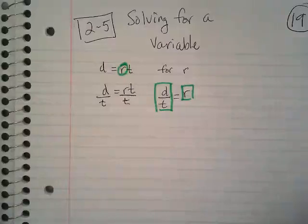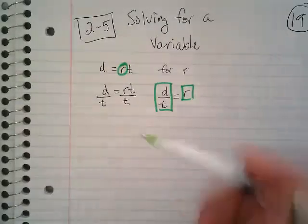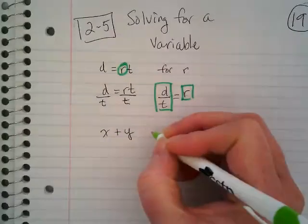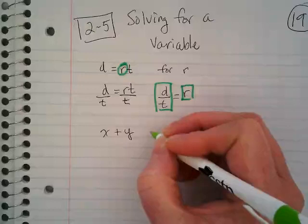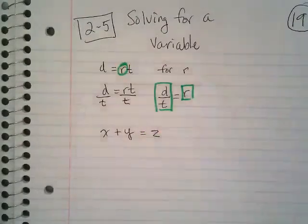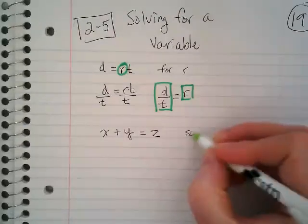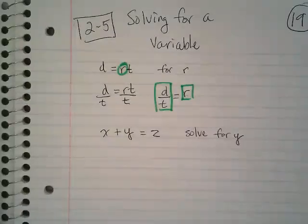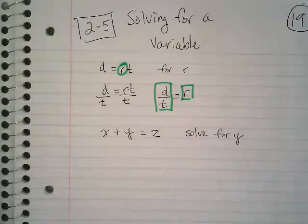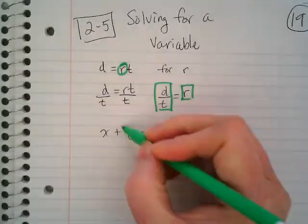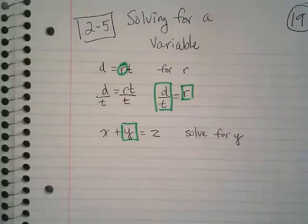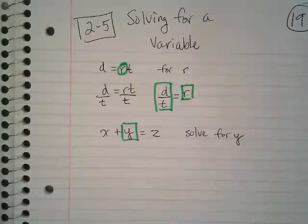It gives some more problems here. What if we have x plus y equals z and we want to solve for y? I'm just using my color coding to focus on this. Y needs to be what's by itself at the end. Once I focus on that, I'm going to look at what else is on the side of the equal sign with it.